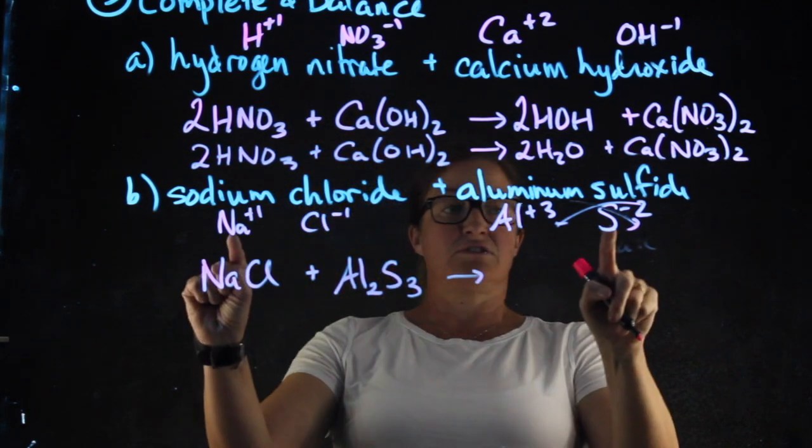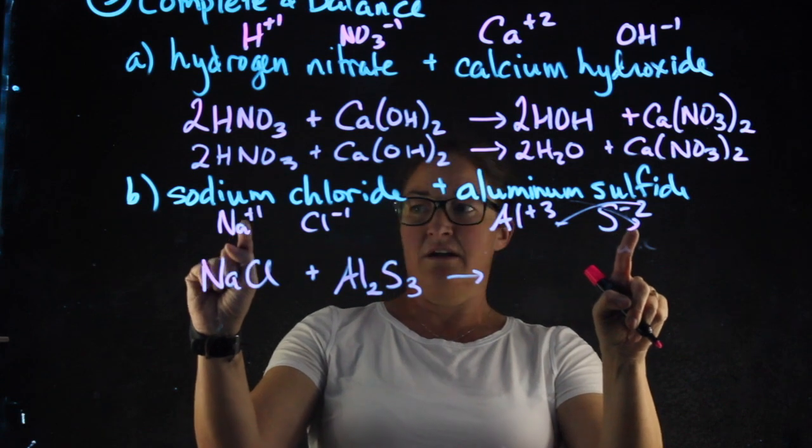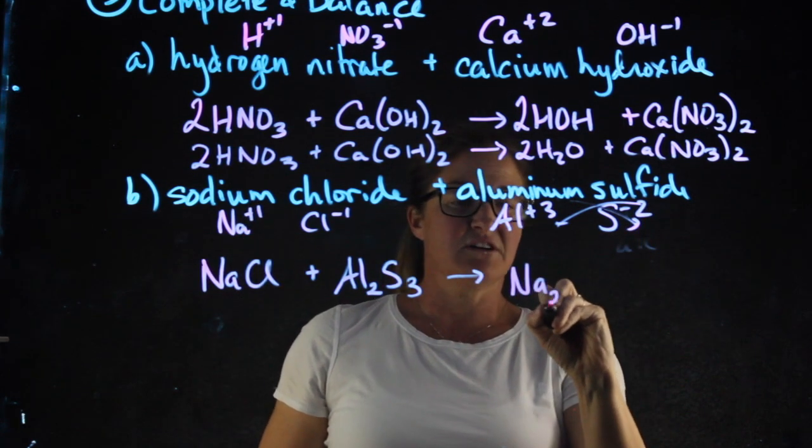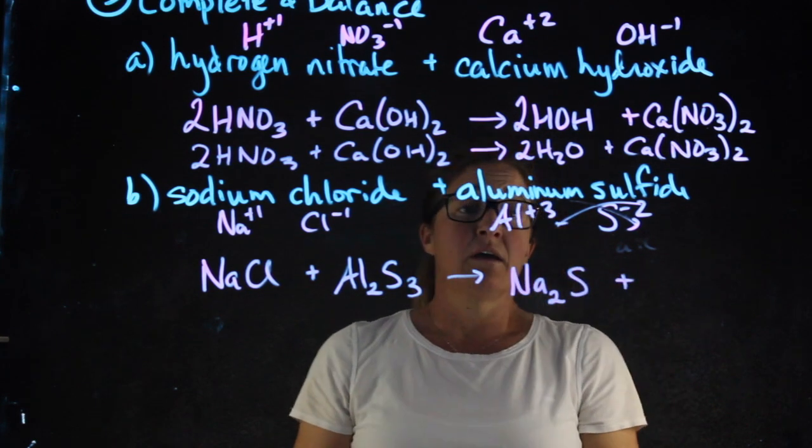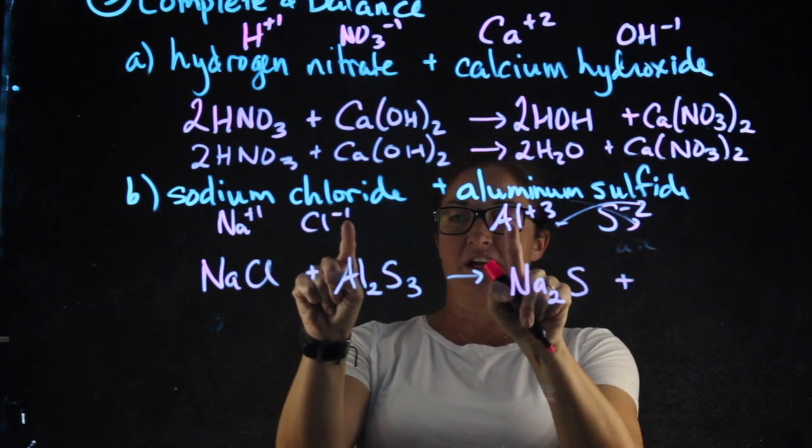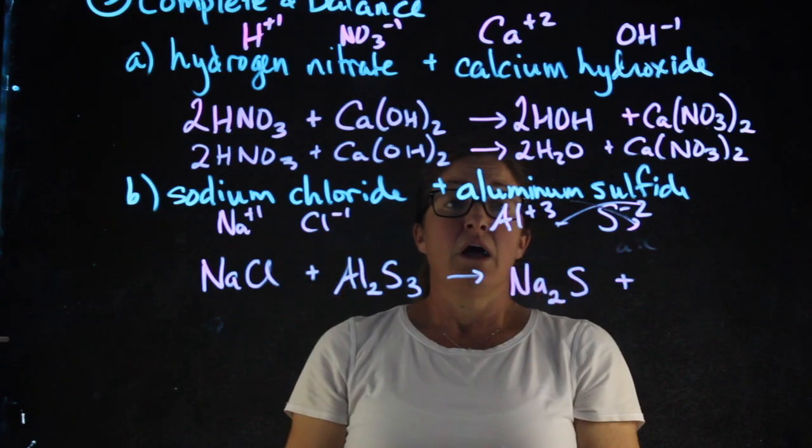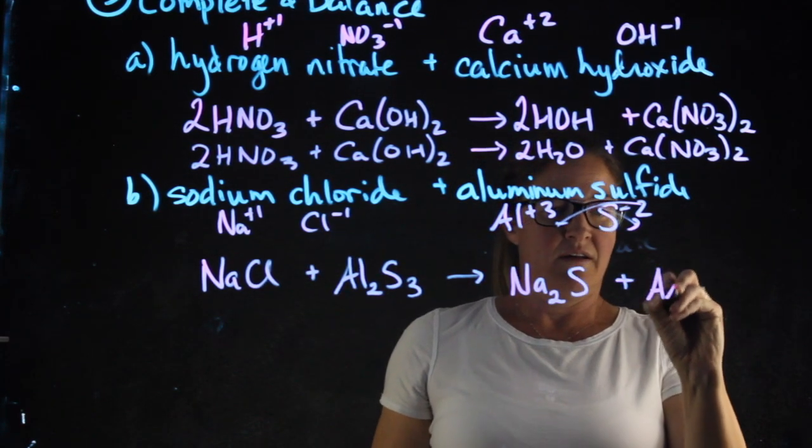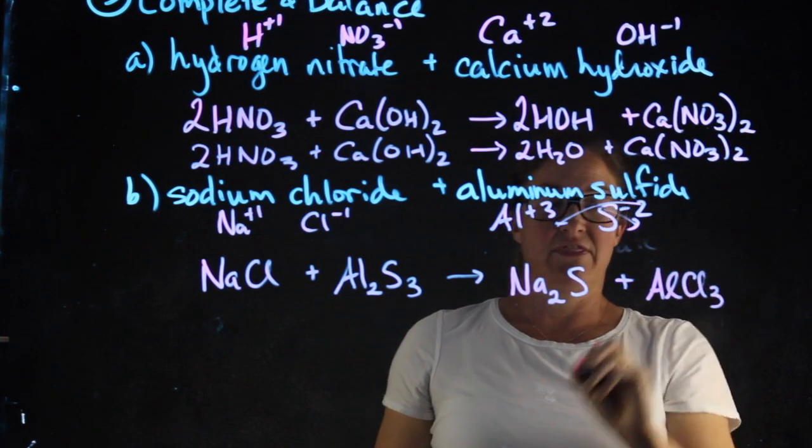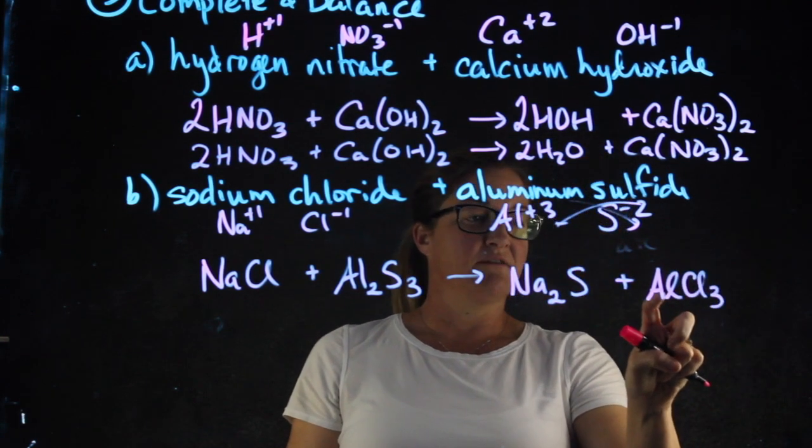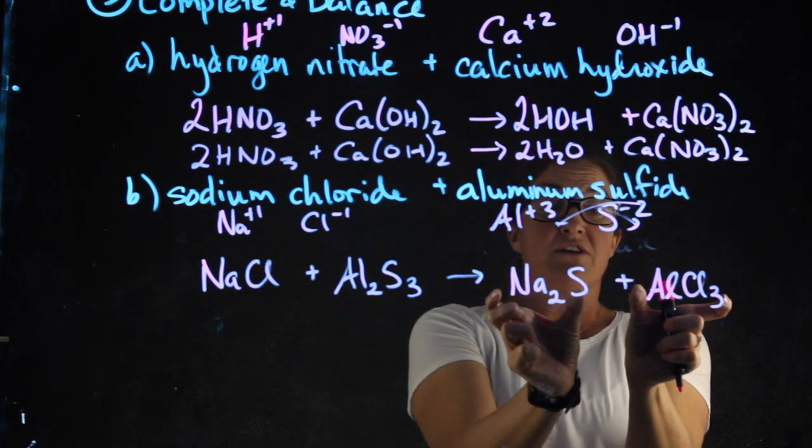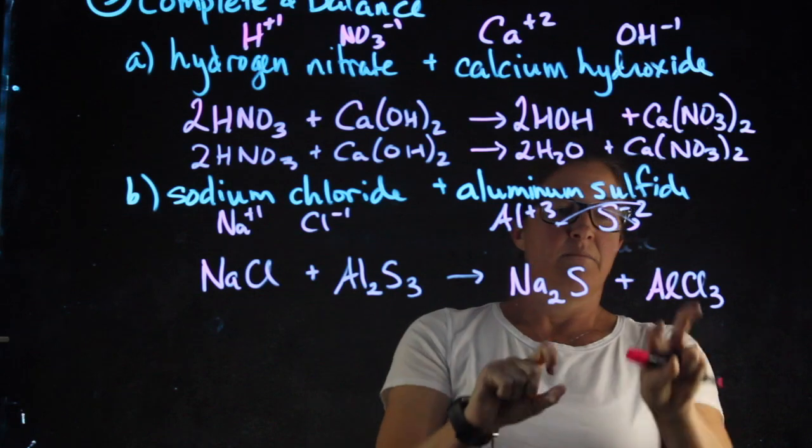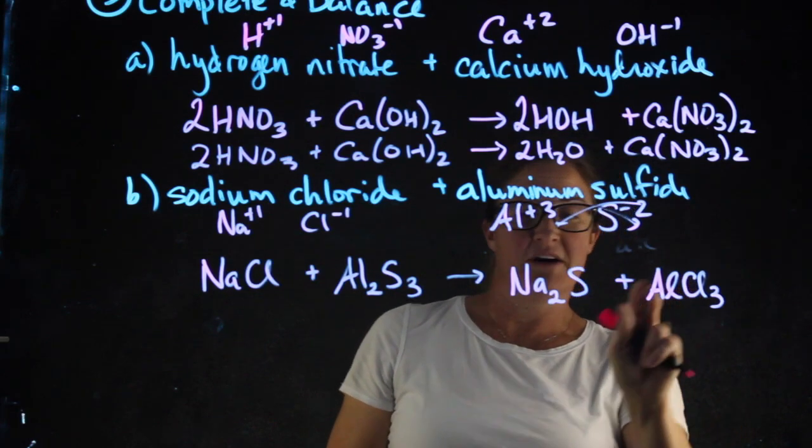For my products, sodium will now bond to sulfur. Since sodium is a plus one and sulfur is a minus two, sodium sulfide is Na2S. My other product will be the combination of aluminum and chlorine. Aluminum is a plus three and chloride is a minus one, giving me AlCl3. Again, make sure the aluminum is before the chlorine. As a reminder, you're welcome to swap these whole things, but within the compound it always has to be positive negative.